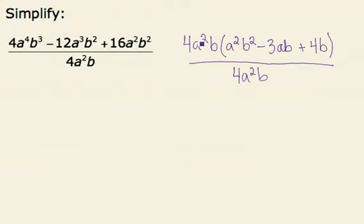Now, I can cancel my two terms of 4a squared b, leaving a final answer of a squared b squared minus 3ab plus 4b.